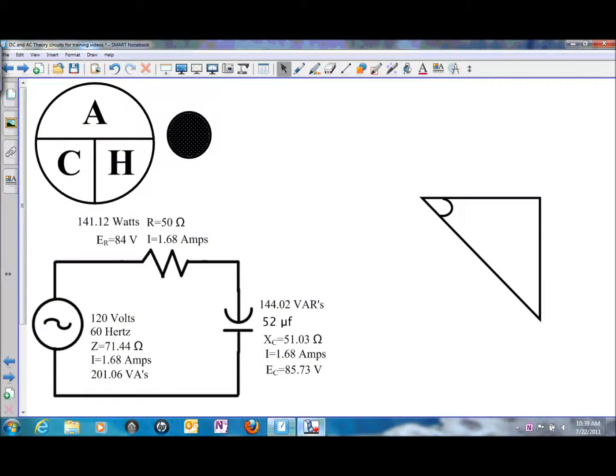In this presentation we will be looking at calculating power factor and angle theta in a series RC circuit. At this particular time we have calculated the individual powers, the wattage for the resistor, the VARs for the capacitor, the voltage drop on both of those components, total current flow, total opposition to current flow. All we have left is power factor and angle theta.